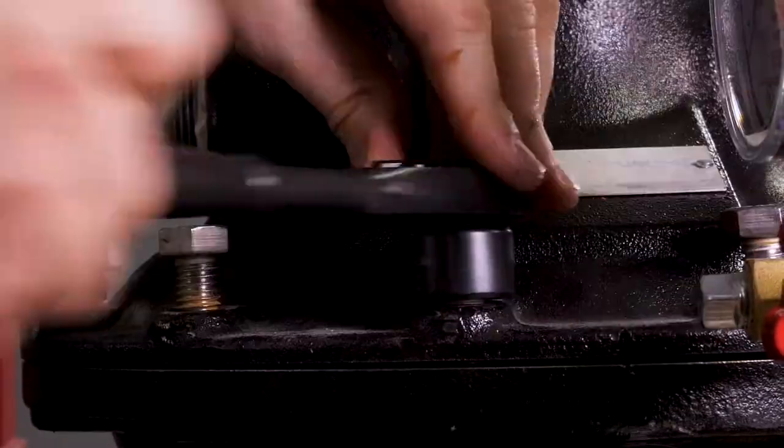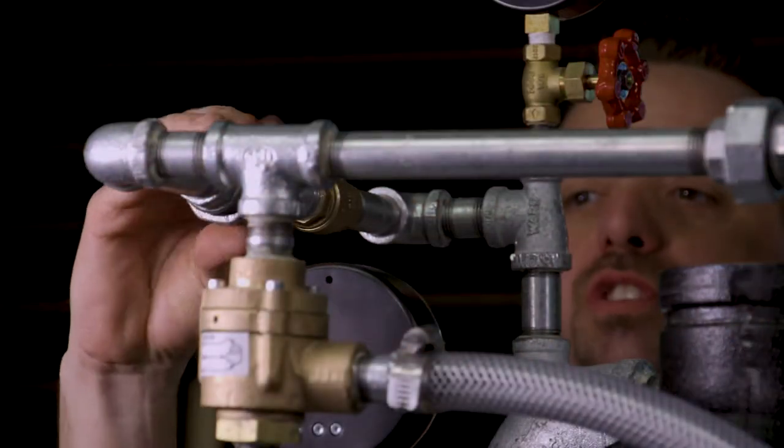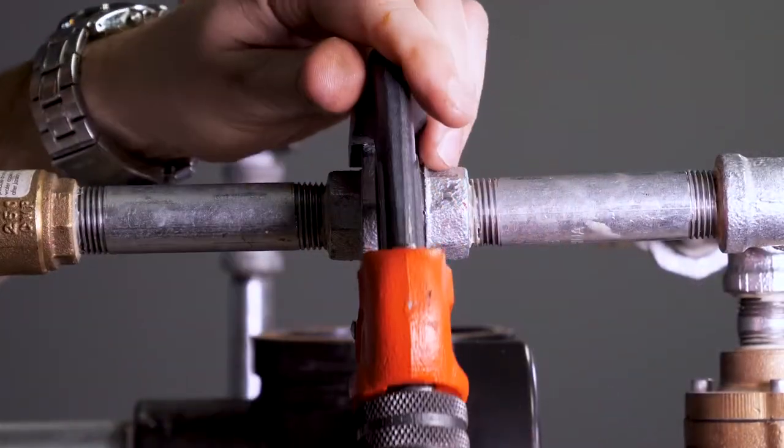Once the cover bolts are reinstalled and tightened down, we can now close the union on the air supply portion of the trim.